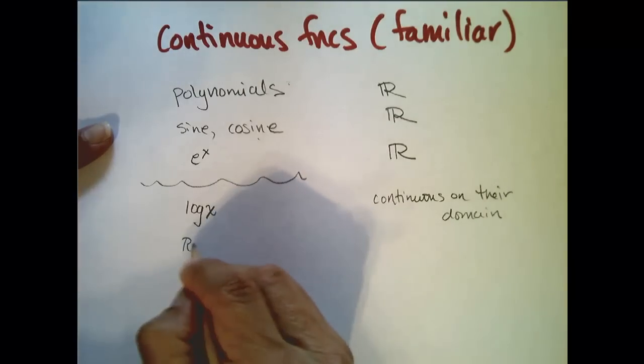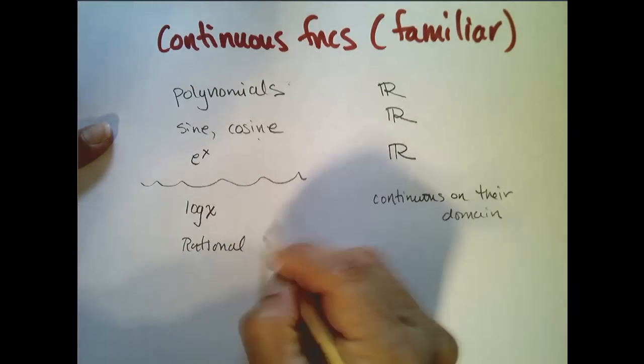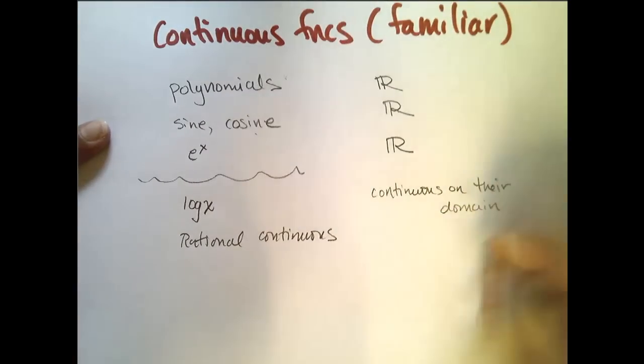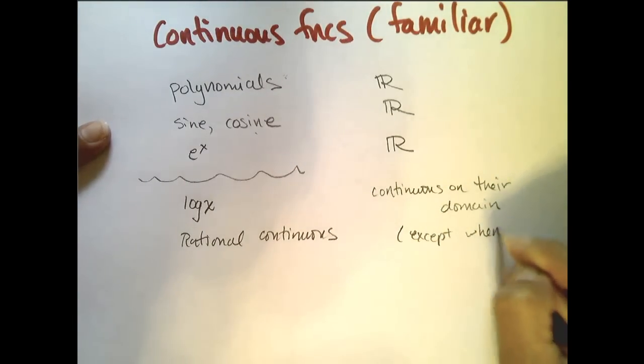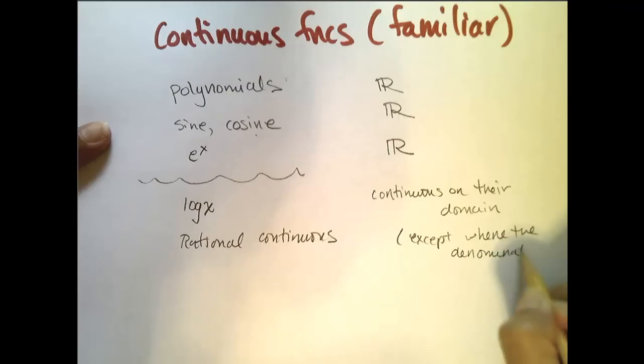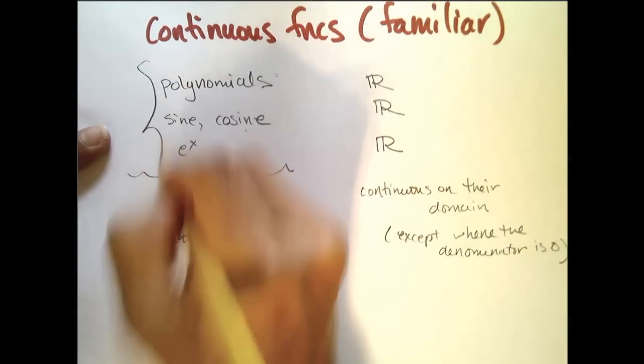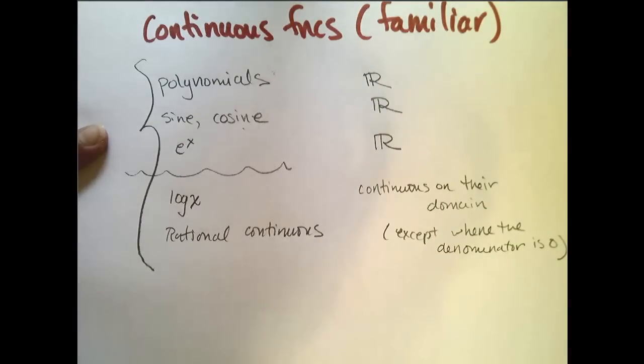Rational functions. They are continuous everywhere on their domain. So they are continuous everywhere except where the denominator is 0. Right? Because that is how we find the domain of a rational function. And there are many more, but these are our common ones. And so that will be helpful to us in many of the problems that we face.